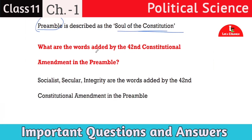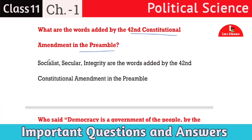Next question: what are the words added by the 42nd amendment to the Preamble? The words 'socialist,' 'secular,' and 'integrity' are the three words that were added to the Preamble by the 42nd amendment. This question may be asked in different ways, so remember it skillfully.